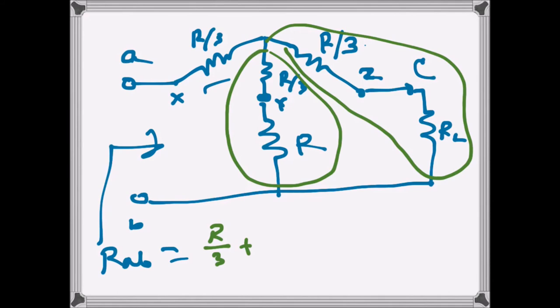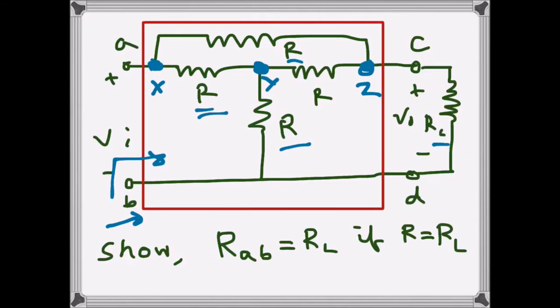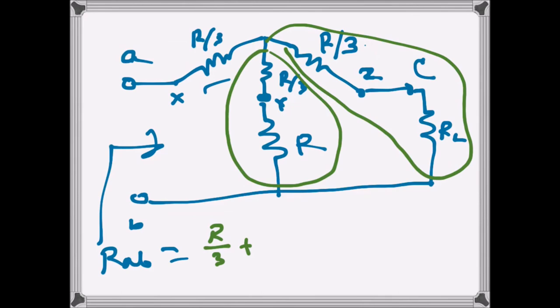But this is R_L, so what I will do at this stage to make it simple, we will replace R by R_L. So this is R_L now, and this is R_L over 3 plus R_L. So R_L over 3 plus R_L, that parallel R_L over 3 plus R_L.